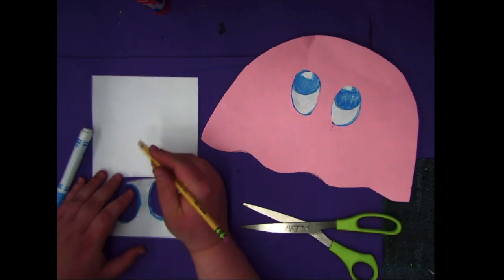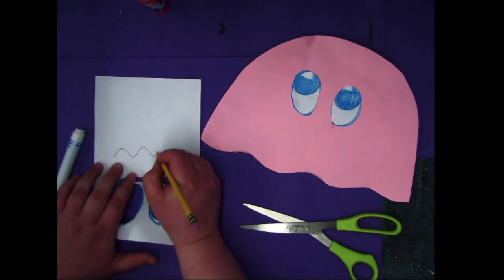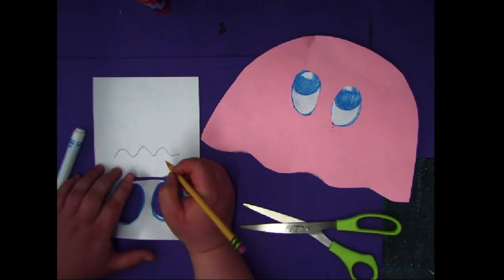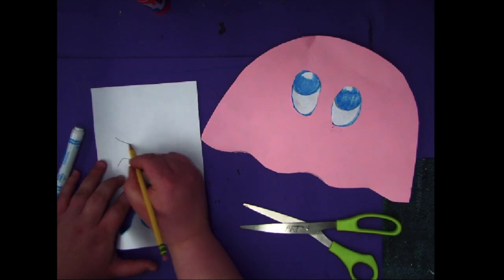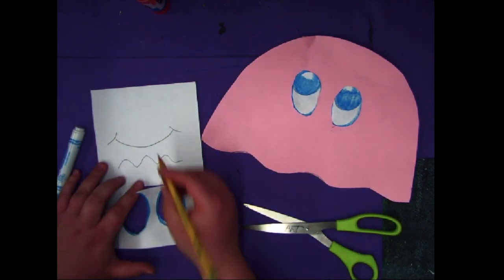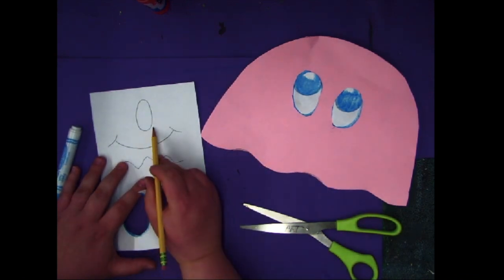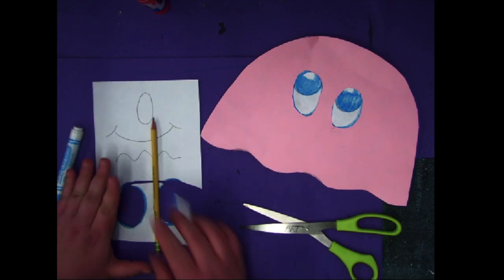So maybe like if my jellyfish wants to feel sick, oh maybe I'll make like a wavy mouth kind of like that. If my jellyfish wants to feel happy, I'll make some lines kind of like that. If my jellyfish is surprised, maybe I'll make... I know that looks like a nose right there, but maybe I'll make a mouth like that. I think that's what I'm gonna do.